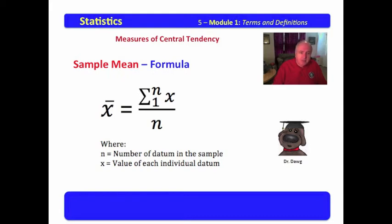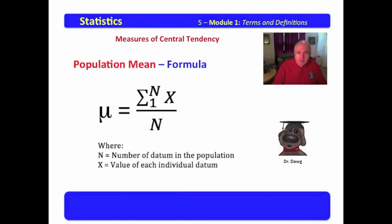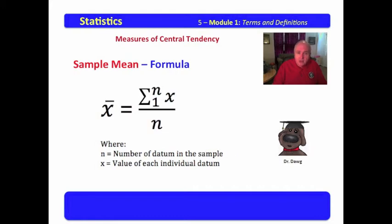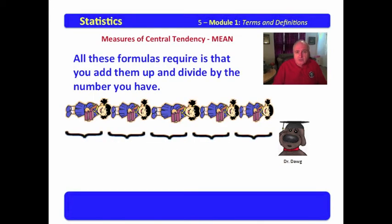For the sample mean, we have this formula: x̄ is equal to the sum of all x values, starting from the first to the last, then divided by the number. You will notice that for the population, we use capital letters; for the sample, we use lowercase letters. The lowercase n is equal to the number of datum in the sample. The lowercase x is equal to the value of each individual datum. Now, all these formulas require is that you do what we did before: we add up all the values, and then we divide them by the number we have. This is indeed some mean stuff.